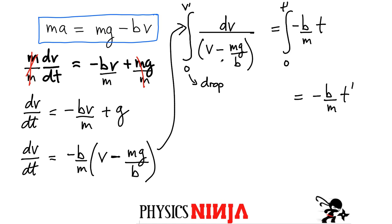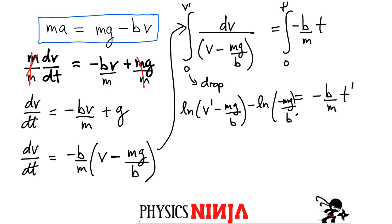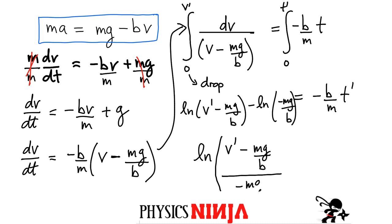The left-hand side becomes the natural log of (v′ − mg/B) evaluated between the limits. Applying the limits and using the property that the difference of two natural logs is the log of their ratio, we get: ln[(v′ − mg/B) / (−mg/B)] = −(B/m)t′. This looks like complicated math, but now we just need to isolate the velocity term.